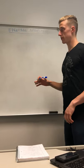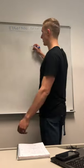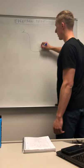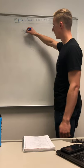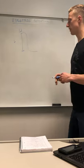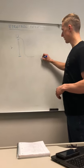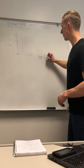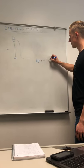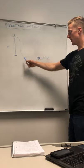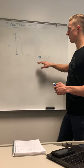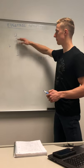To understand electric potential, we first need to understand gravitational potential energy. We have a scenario with a ball at the top of a hill at a certain height — this is stuff we learned in Physics 105. The potential energy of this ball is equal to its mass times the acceleration of gravity times the height. This potential energy is important in reference to another point; without another point, it's not as meaningful.